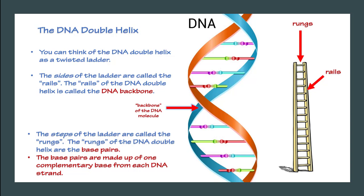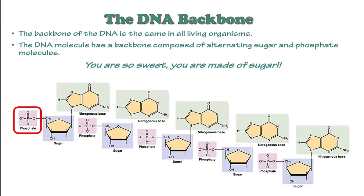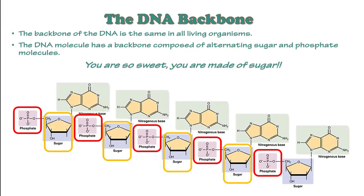The steps of the ladder are called the rungs. The rungs of the DNA double helix are called the base pairs. The base pairs are made up of one complementary base from each DNA strand. The backbone of DNA is the same in all living organisms. The DNA molecule has a backbone composed of alternating sugar and phosphate molecules.